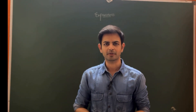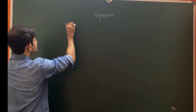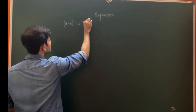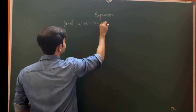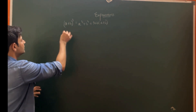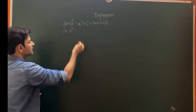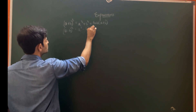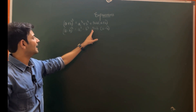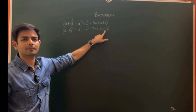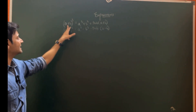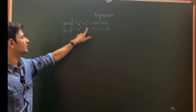Now let's understand some cubic formulas. (a + b)³ = a³ + b³ + 3ab(a + b), which can be expanded as a³ + 3a²b + 3ab² + b³. Similarly, (a - b)³ = a³ - b³ - 3ab(a - b), which expands to a³ - 3a²b + 3ab² - b³. If you have plus, everything is plus; if minus, everything is minus.